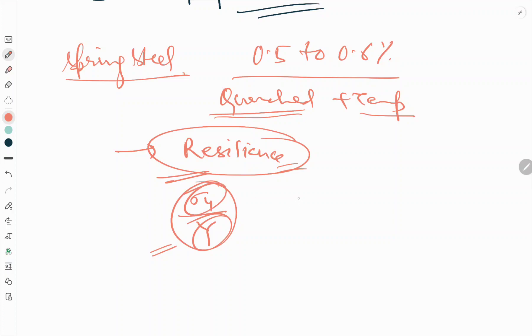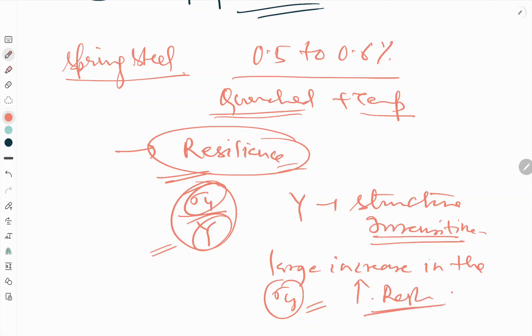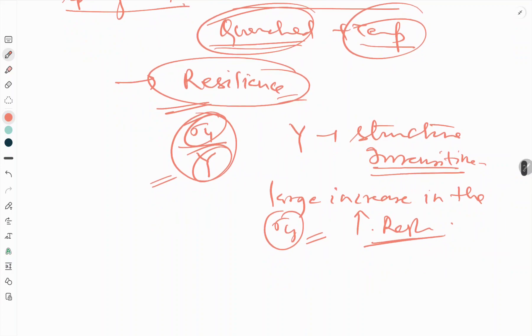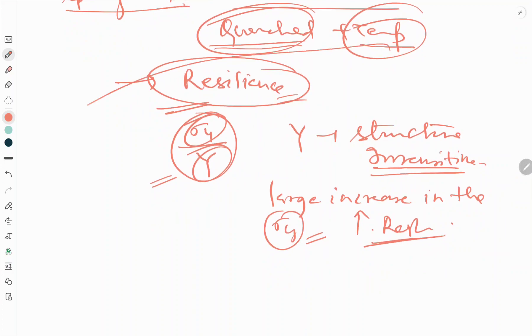The Young's modulus E, by being a structure insensitive property, means large increase in the yield strength sigma Y is the key factor to achieve high resilience. Tempering is done to give a high yield strength of about 1500 MPa.